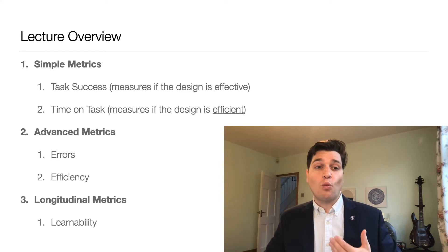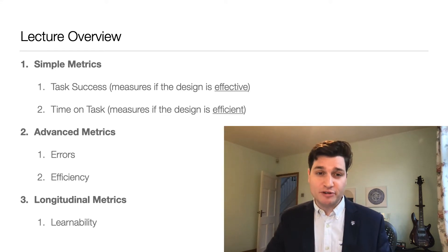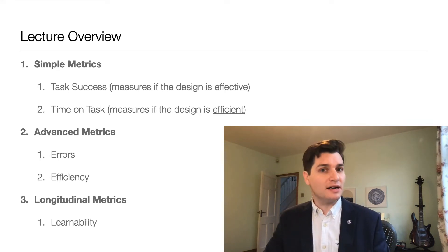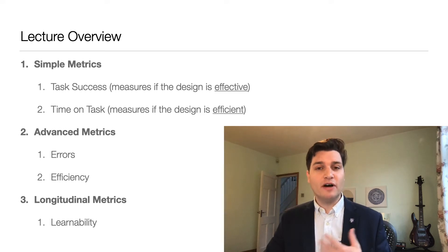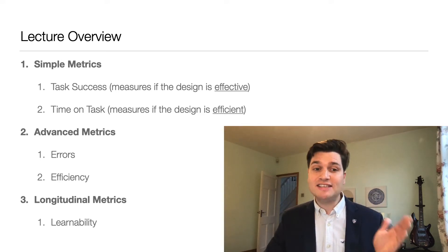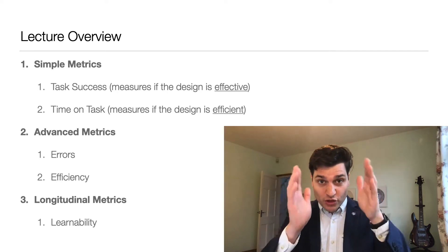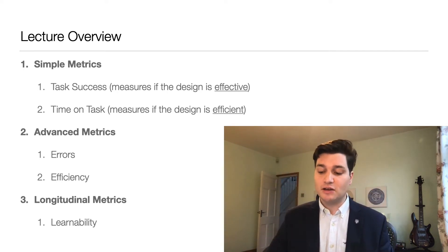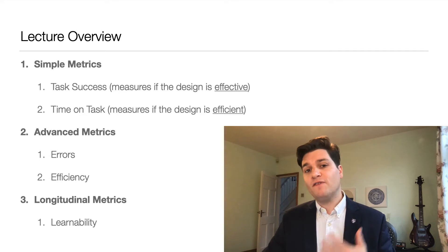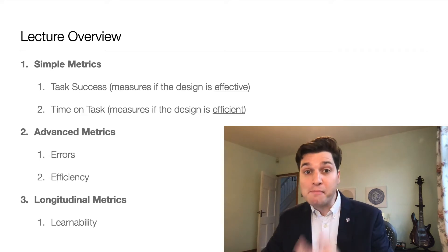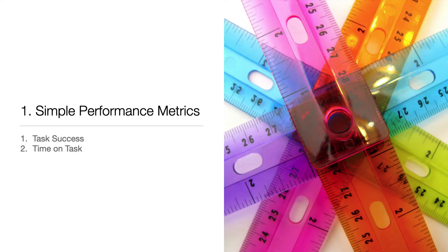We can break this down into three categories. There are simple metrics that look at task success — does it work — and the time on task, so how long does it take. We have the advanced metrics of understanding the errors and the efficiency, which is the amount of work the user puts into using your website or app. Then finally, we're thinking about the long-term impact of your design.